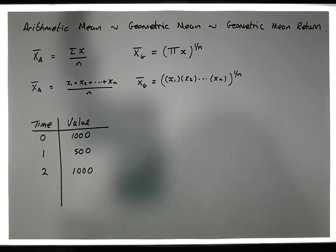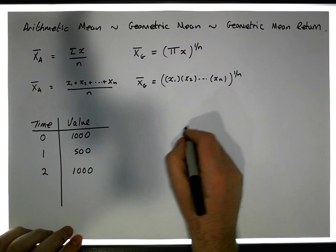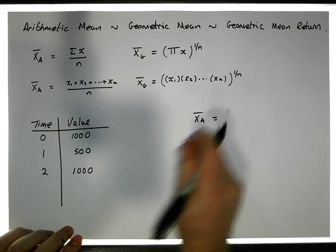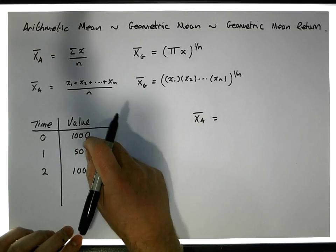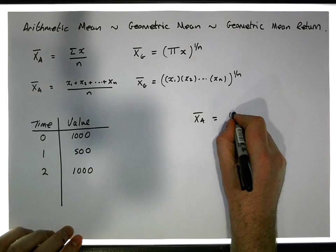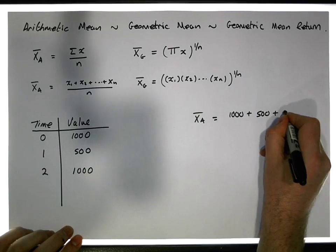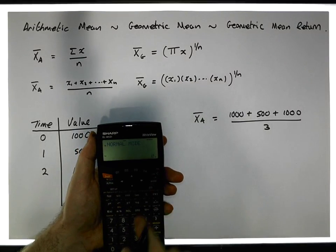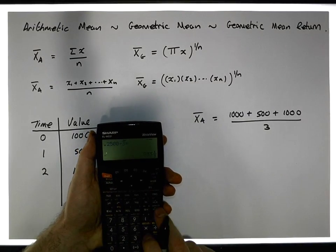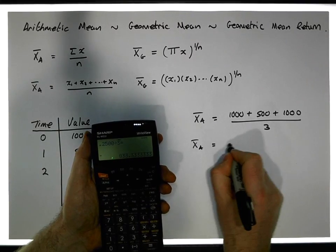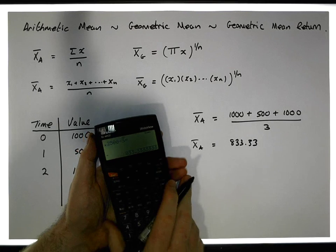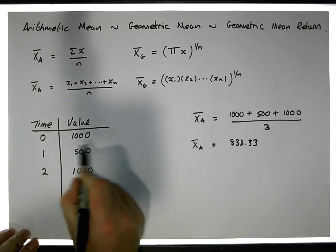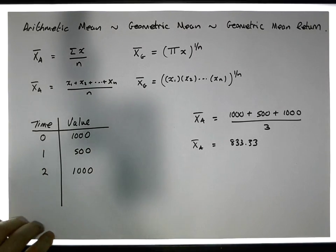What we could do is calculate the arithmetic average of these particular values. The arithmetic average x̄_a is simply the summation of these values — we want the arithmetic average value of the investment. So it's (1000 + 500 + 1000) divided by 3, which gives us 2500 divided by 3, giving a value on average of €833.43. That's what the investment's value was on average across these three points in time.